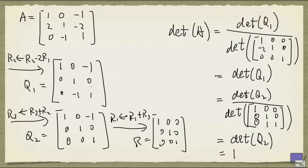One thing you see here is that for all three operations performed, they are of the same kind and they all have determinant equal to 1. This is actually not a coincidence. We'll now take care of all three elementary row operations and see what their determinants are.